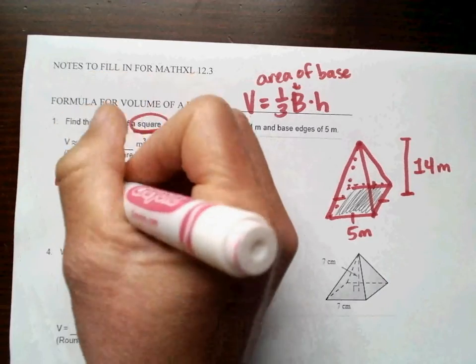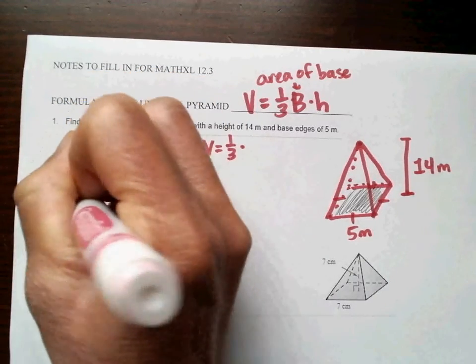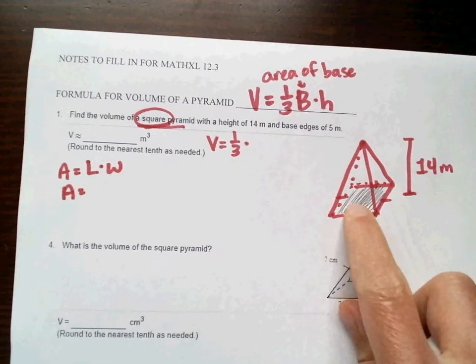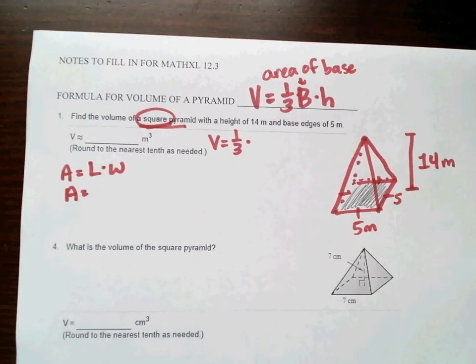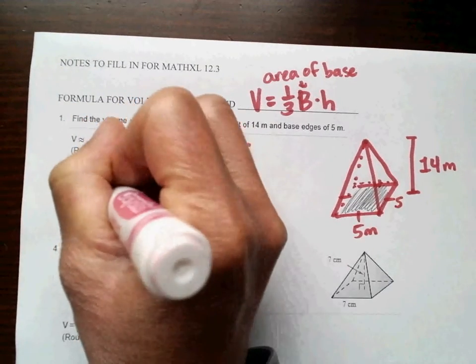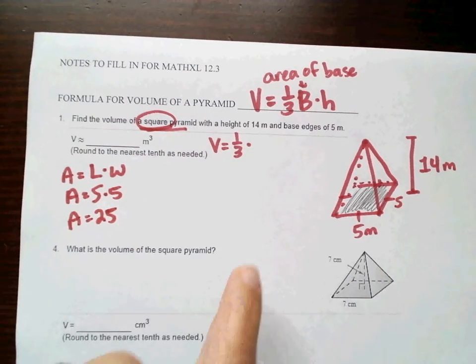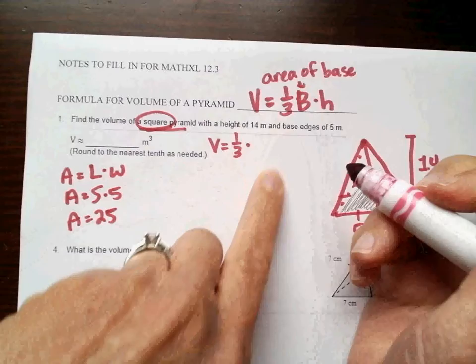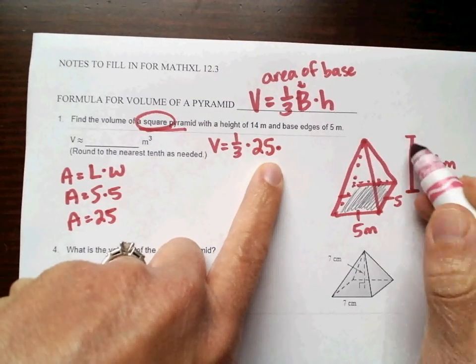The area of a square is just length times width, base times height, or side squared, however you want to say it. The length and width of this square is 5 and 5, because these are the same length. So this would be 5 times 5, which gives us 25. So for big B in our formula, is going to go area of the base, which is 25, and then times the height of the pyramid, and we already said the height was 14.